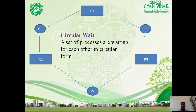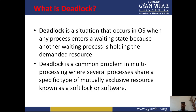In circular wait, a process is waiting for a resource held by a second process, which is waiting for a resource held by a third process, and so on — until the last process is waiting for the resource held by the first process, forming a circular chain. For example, process P1 is allocated R2 and requesting R1; process P2 is allocated R1 and requesting R2.